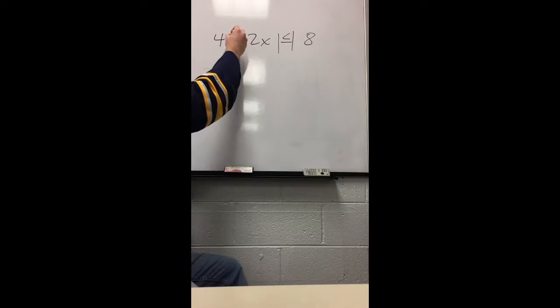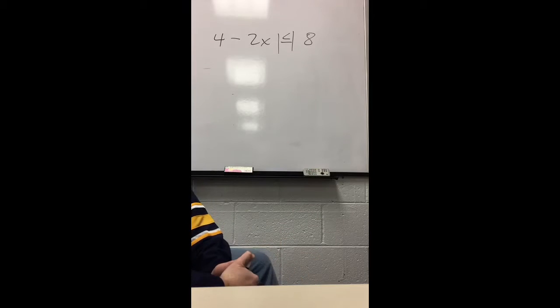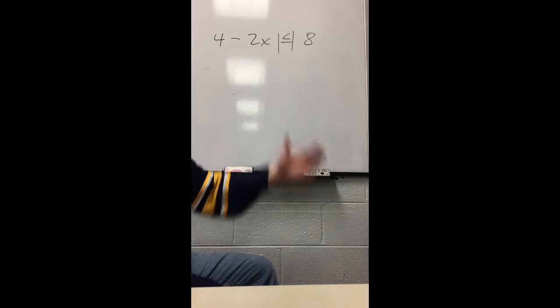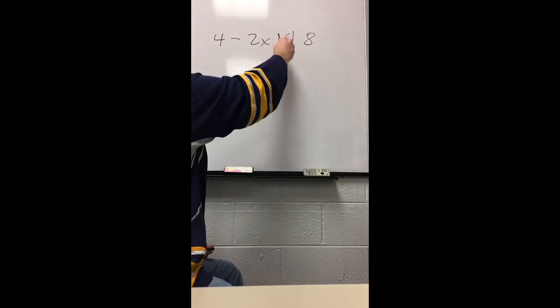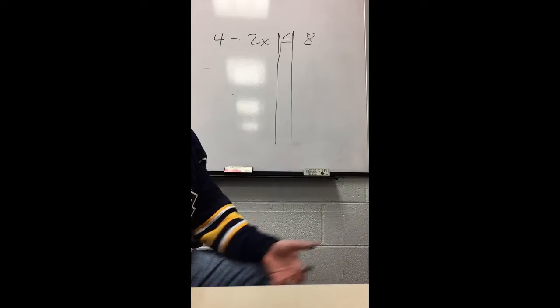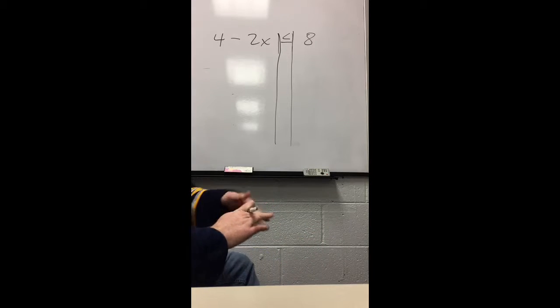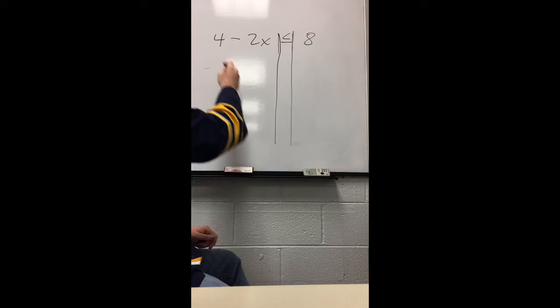to the one that we just did, only now that coefficient in front of x is negative. So the solving process doesn't change, okay? Distribute, combine like terms, get the variable on one side, get rid of the constant, get the variable by itself. None of that changes.